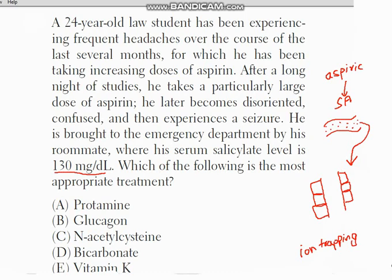In this case, the acidic level increases and salicylic acid has a hydroxyl group — it is acidic. So what we do is add a basic substance into the urine to make the urine basic, which then deprotonates the proton from salicylic acid. Now it becomes an ionized particle.